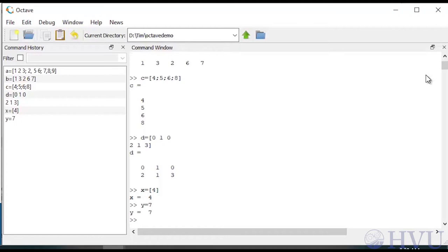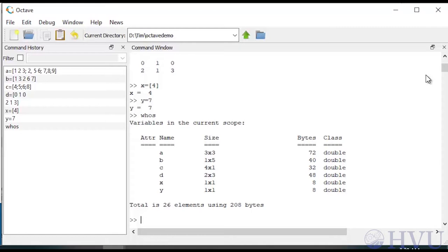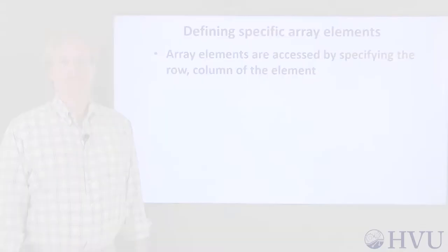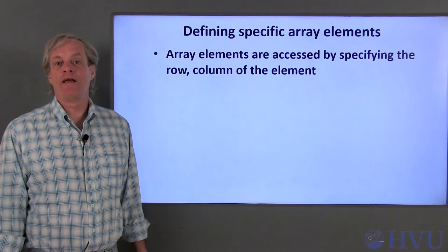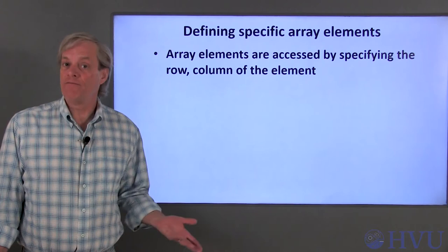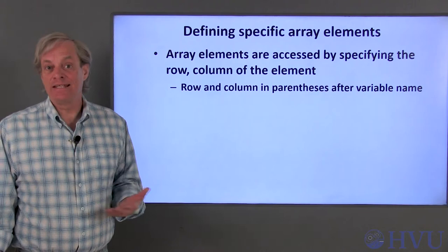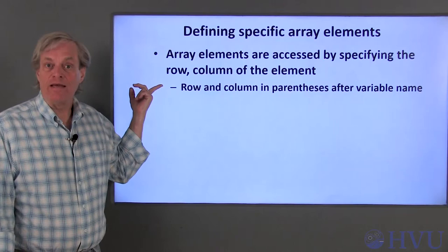Now let's take a look at the contents of the workspace with the WHOS command. If you need to redo a command, press the up arrow on your keyboard to cycle back through previous commands. You can also define specific elements of an array by referencing the element by its indices. In typical mathematical array notation, elements are specified by the row and column numbers in that order. In Octave, the row and column numbers are placed in parentheses after the array name instead of using subscripts, and must be separated by a comma. Numbering of rows and columns always starts with one.